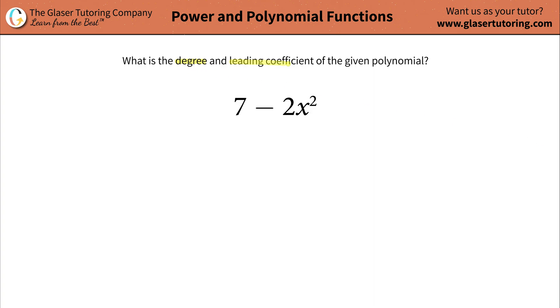What is the degree and leading coefficient of the given polynomial, 7 minus 2x squared?